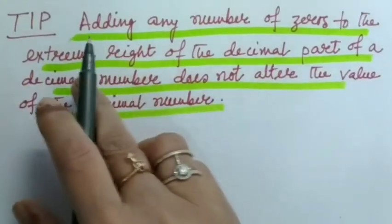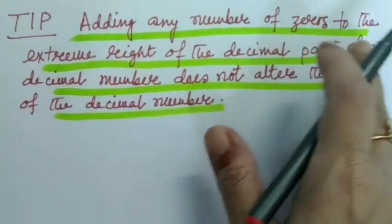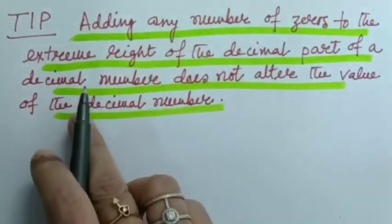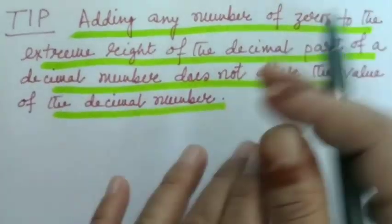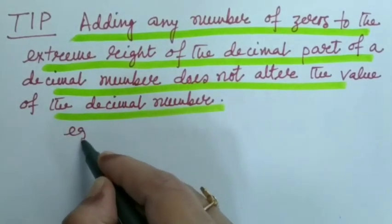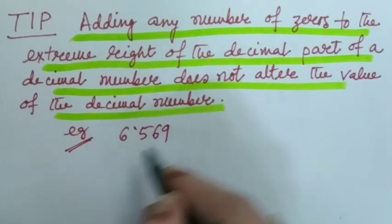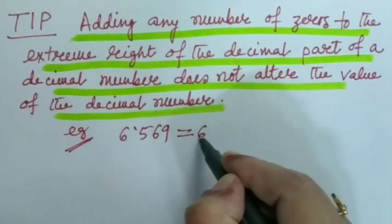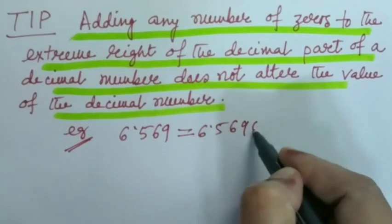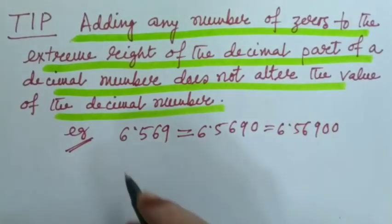So this is tips time. Adding any number of zeros to the extreme right of the decimal part of a decimal number does not alter the value of the decimal number. For example, if we write like this: 6.569, then this is equal to 6.5690 equal to 6.56900 and so on.